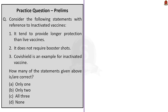The fourth question: consider statements about inactivated vaccines. Statement 1 — inactivated vaccines tend to provide longer protection than live vaccines — is wrong. Statement 2 — inactivated vaccines do not require booster shots — is also wrong. Compared to live vaccines, inactivated vaccines provide short-term protection and require booster shots for long-term immunity. Statement 3 — Covishield is an example of an inactivated vaccine — is also wrong, because Covishield is a viral vector vaccine. The correct answer is option D.